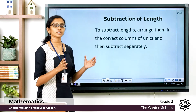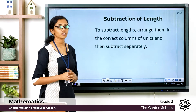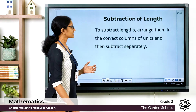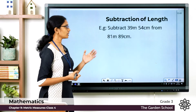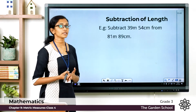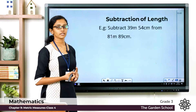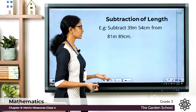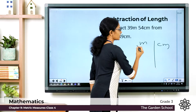Now let's see how we can subtract lengths. The procedure is the same — make sure you are arranging the given measurements in correct columns of units and then subtract them separately. Let's see one example: subtract 39 meter 54 centimeter from 81 meter 89 centimeter. The bigger measurement is 81 meter 89 centimeter, so from this we subtract the other. The first step is to arrange them in proper columns of units, so we draw a grid.